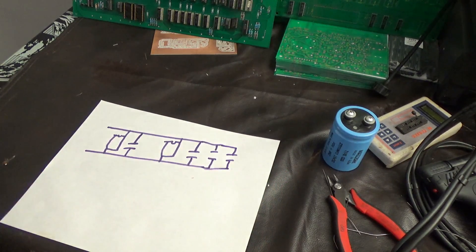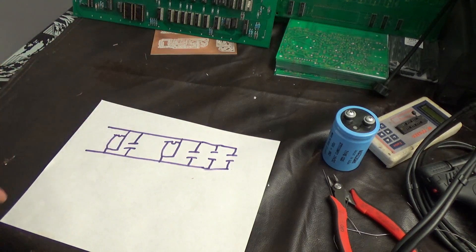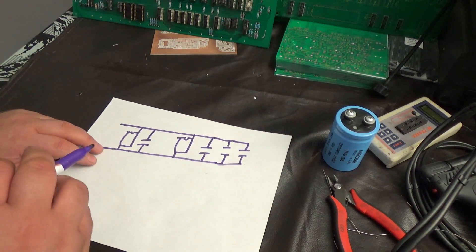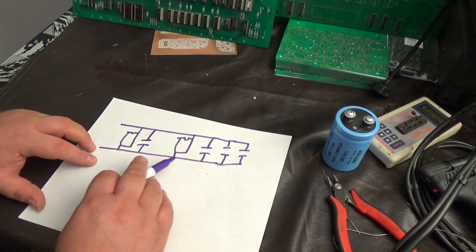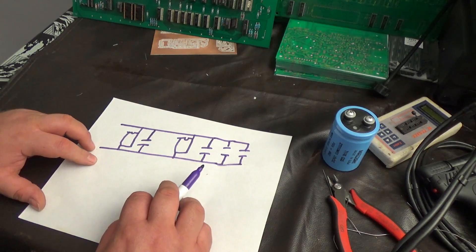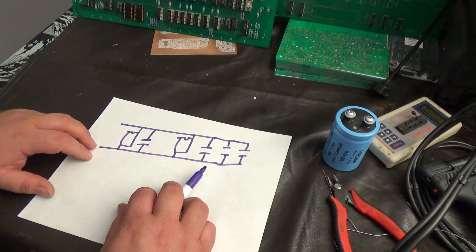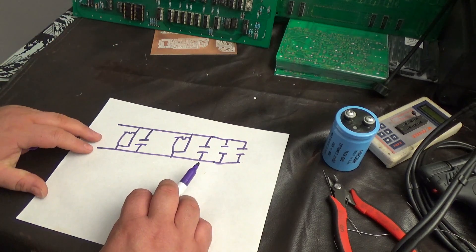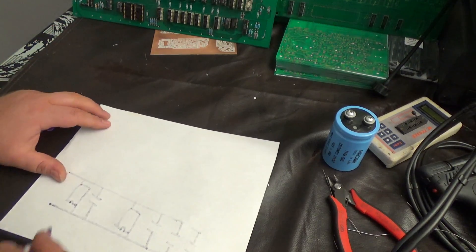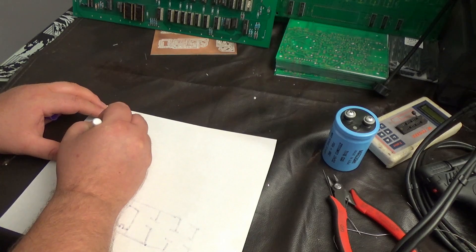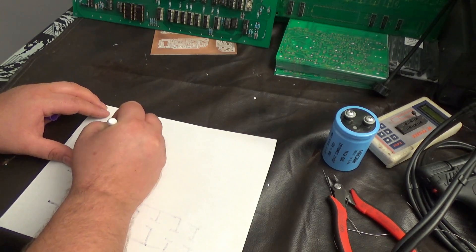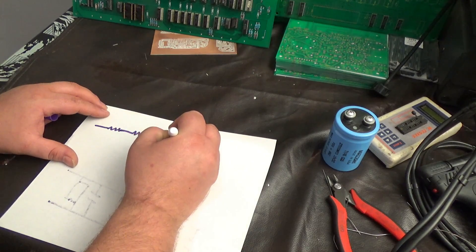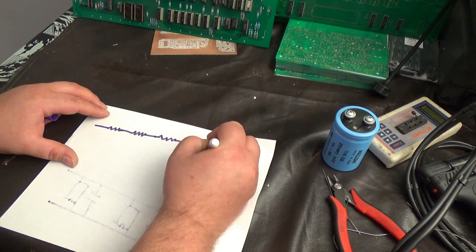In fact, you could even look at it like this, as many schematics even show it. Well, the reason why you need more than one of these, and I'm going to try to explain what it's for, but you can't picture the power rails as a dead short because it's not. There is an amount of resistance between that copper wire on your circuit board.